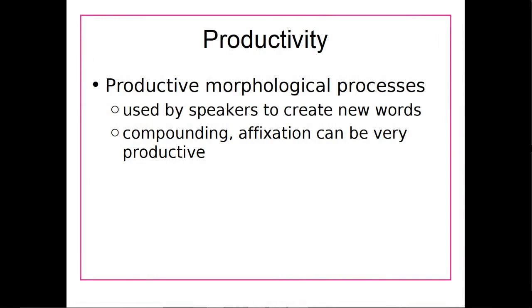This is what's called a productive morphological process — compounding. Basically, this is a morphological process where we take multiple morphemes and put them together, and it is a process used by speakers to create new words. So compounding, when we take one word and another word and combine them into a new word, is an example of a morphological process.